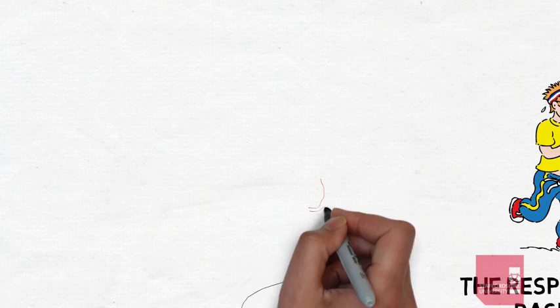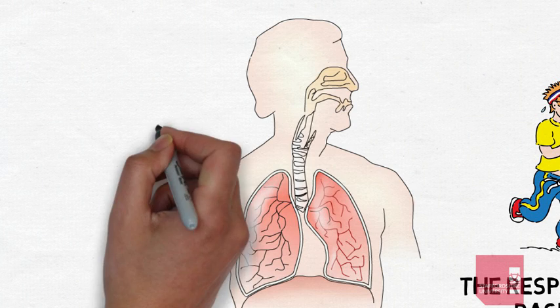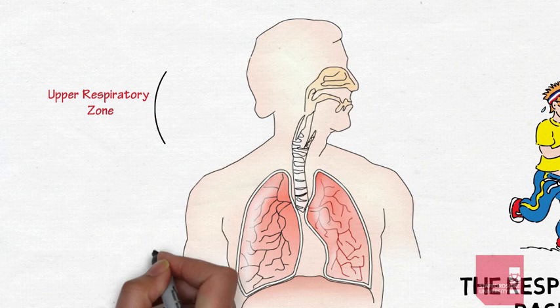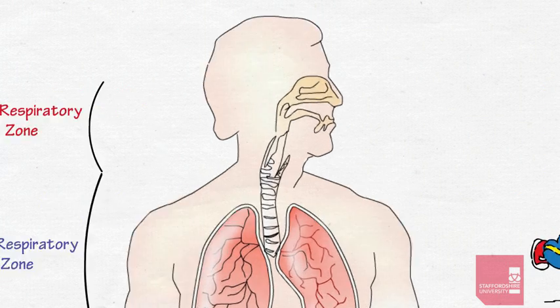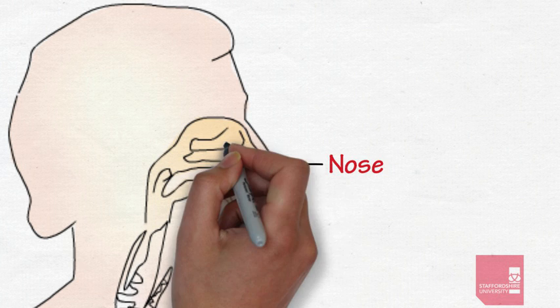The respiratory system can be divided into two areas or zones: the upper respiratory zone and the lower respiratory zone. The upper respiratory zone consists of the nose, the nasal cavity,